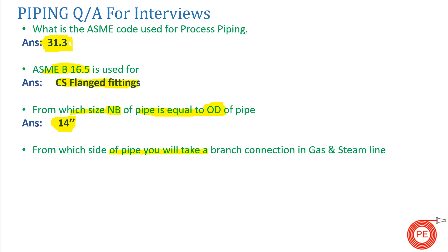The next question is: from which side of the pipe do you take a branch connection in a gas and steam line? The answer is from the top side. This applies to gas and steam lines. However, if someone asks from which side you take the connection for a water line, the answer is the bottom side. So for gas and steam it is top side, and for water it is bottom side.